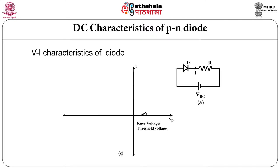Practically we have to see the VI characteristics as shown in the figure. Diode is connected in series with load and the circuit is connected to positive power supply. In forward bias condition you can see the nature of the characteristics is exponential — current rises fast. This voltage at which current starts rising fast is called as knee voltage or threshold voltage.